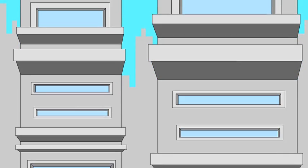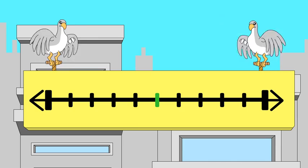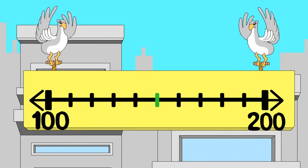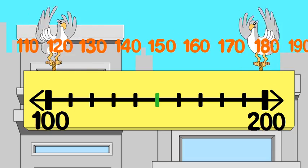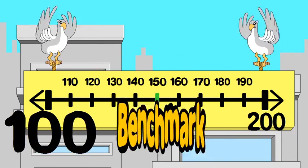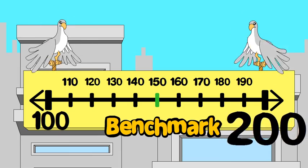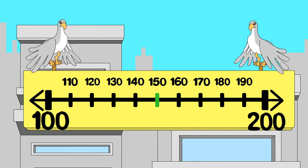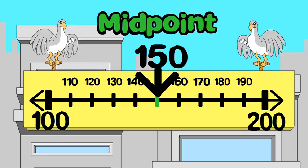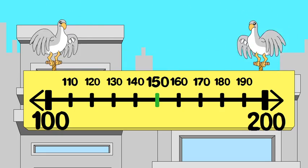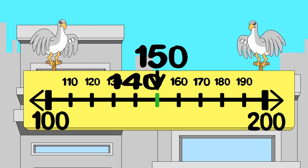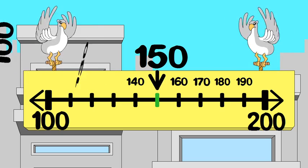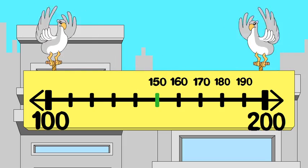Here are some useful things to know. You can show any number on a number line. Numbers to the right have a greater value than numbers to the left. The nearest hundred on either side of our number is a useful benchmark, and the midpoint is the number halfway between two benchmarks. If the number you want to round is less than the midpoint, round down. If it is at the midpoint or greater, round up.